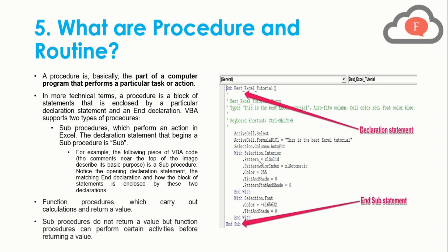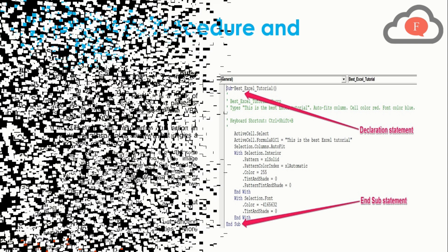The second type is function procedures, which carry out calculations and return a value. Sub procedures do not return a value, but function procedures can perform certain activities before returning a value.